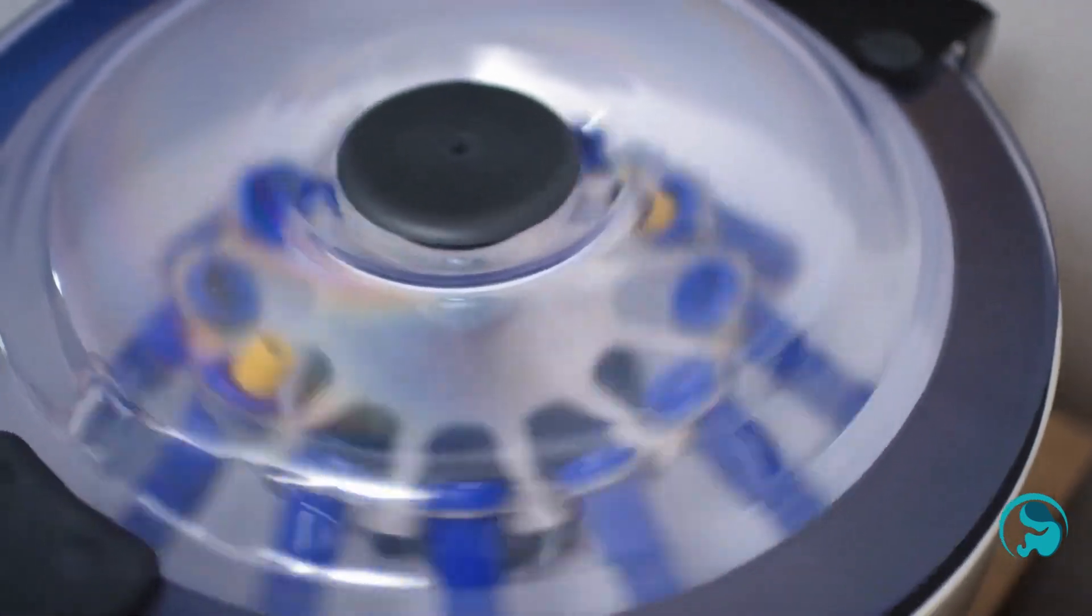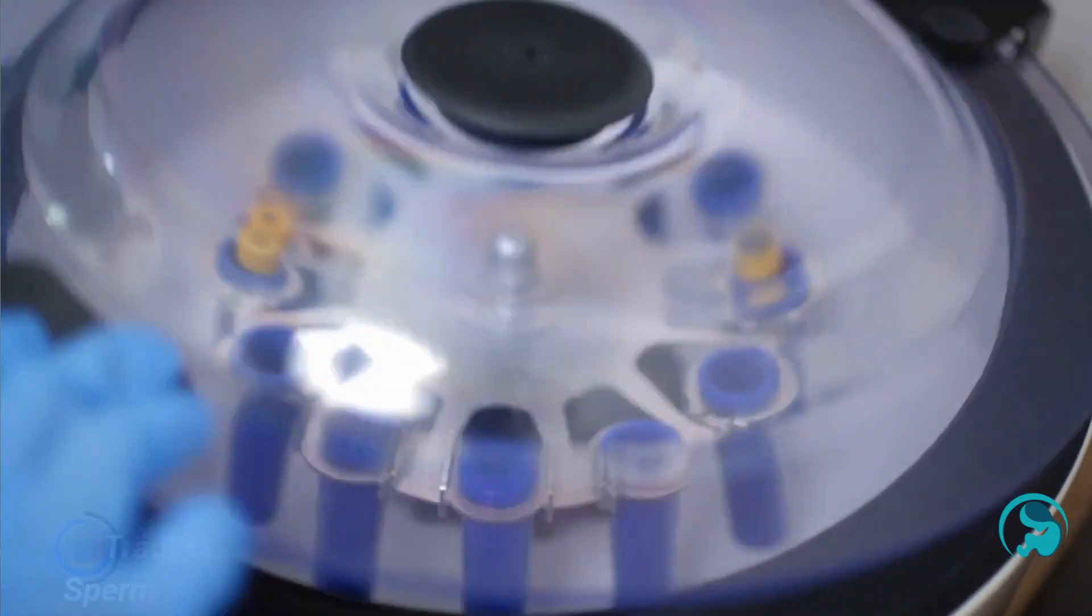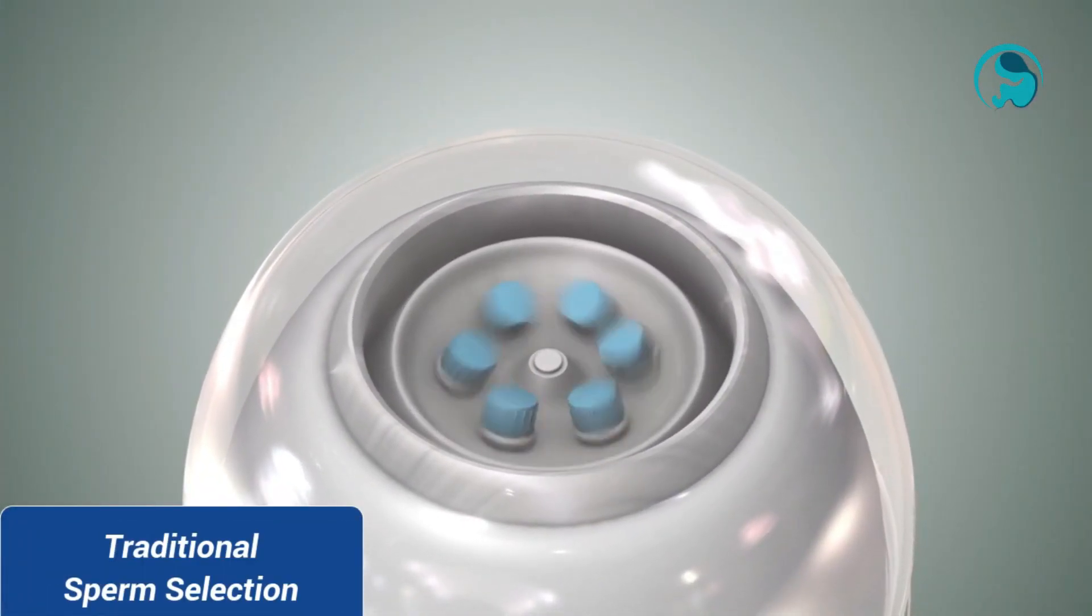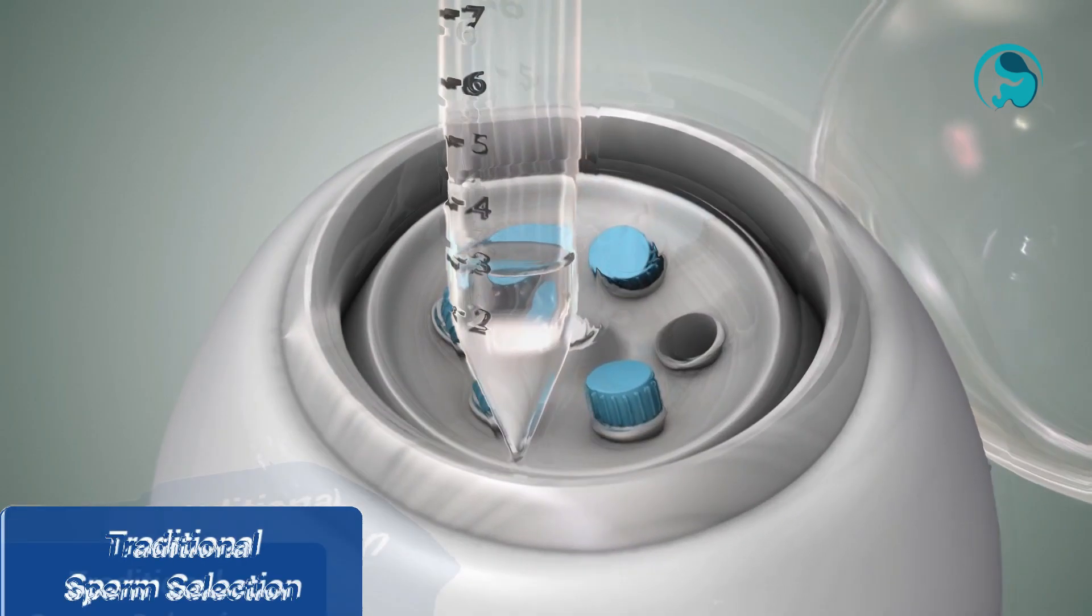One of the major disadvantages of this method is that spinning the semen sample at high speed can cause mechanical stress and damage to the DNA of the delicate sperm cells.